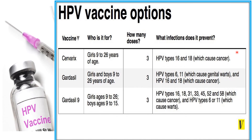Is there a vaccination program for preventing Human Papilloma Virus? Yes, there is a proper vaccination program. The information is presented in a clear table. The vaccines are Cervarix, Gardasil, and Gardasil 9. Cervarix is given to girls between 9 to 26 years of age in three doses.